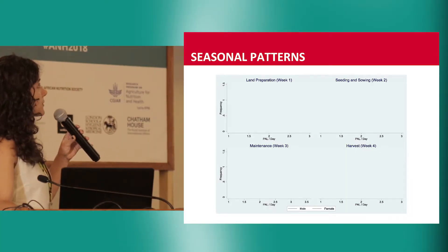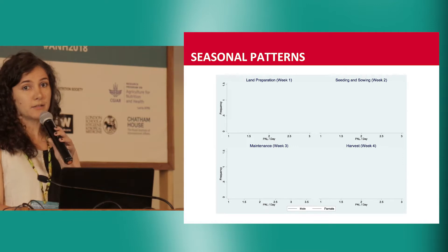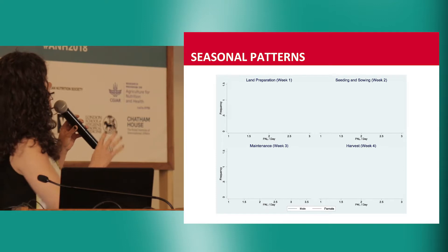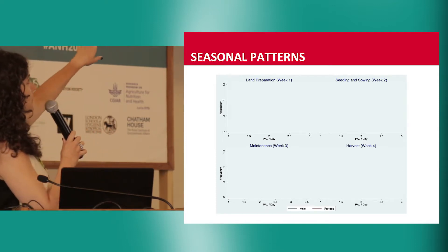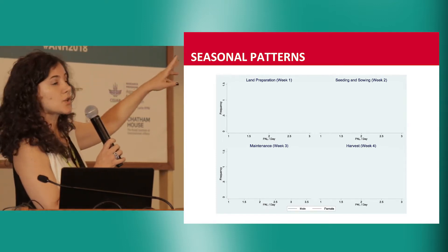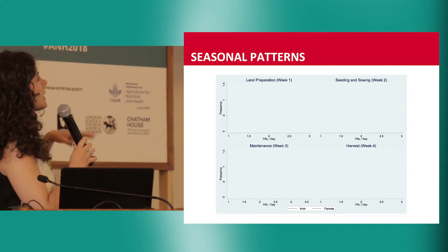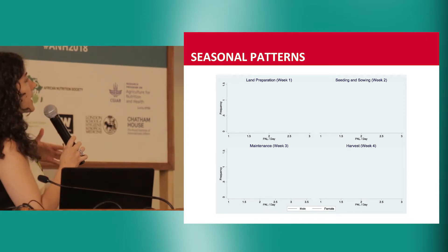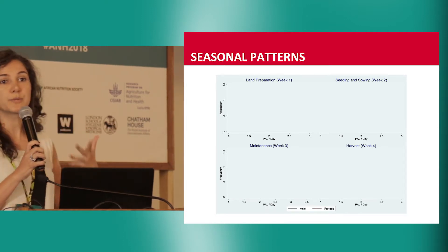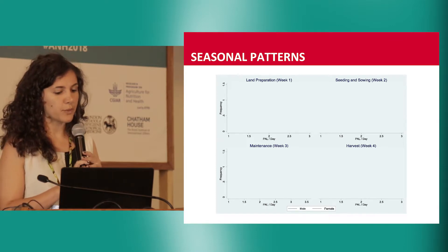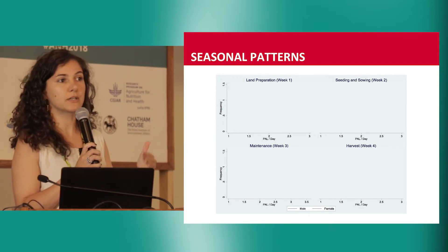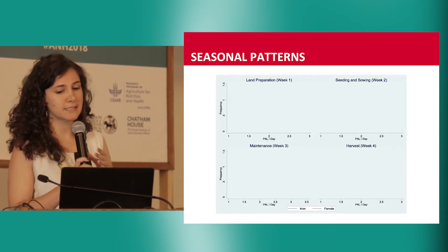This first graph shows the density distribution of daily PAL for men and women. Each graph represents one stage of the agricultural cycle: land preparation on the top left, seeding and sowing, maintenance, and harvest. The darker line represents the density distribution of PAL for men, and the red line represents the density distribution of PAL for women. As you can see, women's PAL tends to be greater across all agricultural seasons.